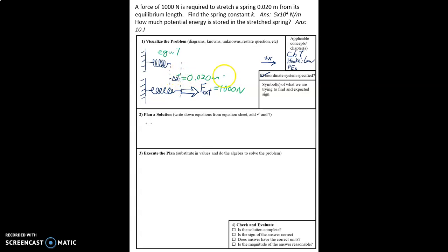so delta x is a vector, and to the right is our positive direction, so that's a positive value. This force is in the positive direction. That's the external force required to get it to move.